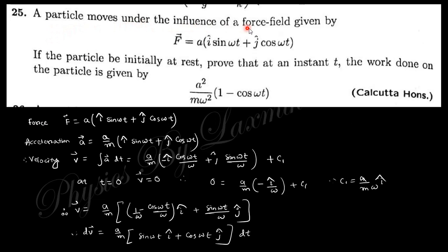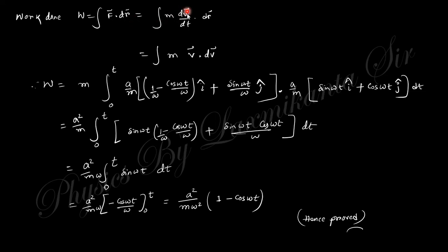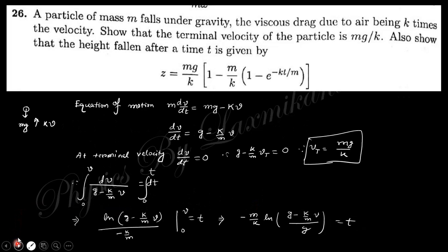Next question: a particle moves under the influence of a given force field. If the particle is initially at rest (v=0 at t=0), prove that at any instant t the work done equals the given expression. Acceleration equals force divided by mass; integrating gives velocity. Using the initial condition (rest at t=0) gives the constant. Finally, work done equals the integral of F · dr = m(dv/dt) · v dt, and substituting the values of v and dv yields the required expression.